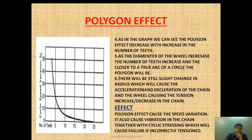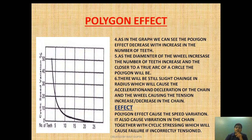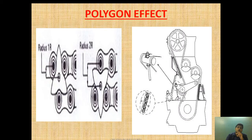So what are the effects of polygon? The polygon effect causes three things: first, speed variation due to acceleration and deceleration; second, vibration in the chain; and third, cyclic stress which will cause failure if the chain is incorrectly tensioned.